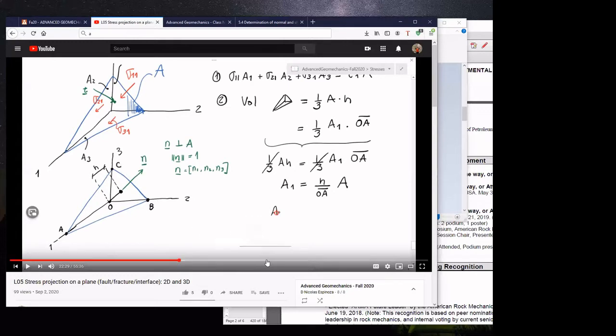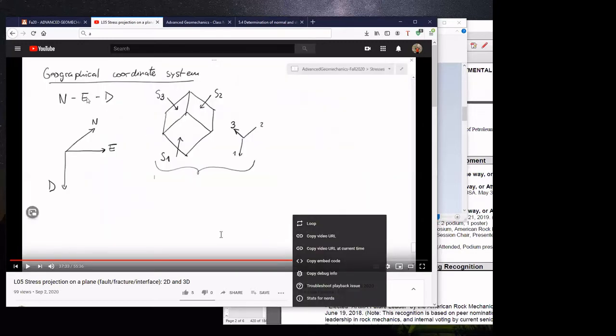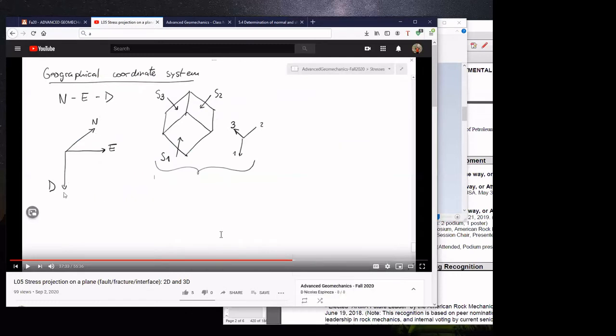But in real conditions, then we need another coordinate system. And this is the north, east, and down or depth coordinate system. So any state of stress, any principal stress that we may have, either if it coincides with the east direction or not, with the north, or even if we have a vertical stress, which is a principal stress or not, in order to apply this method, we need to bring this tensor into this coordinate system, north, east, and depth.